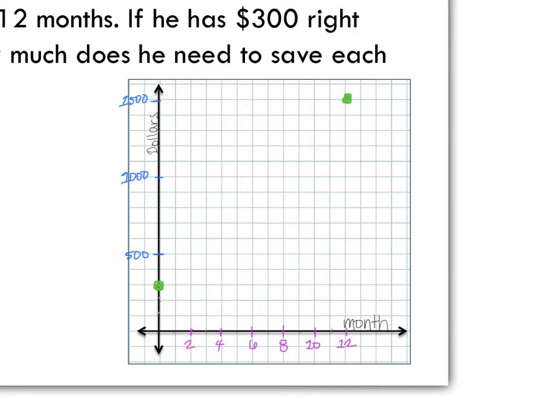So what we want to find is the slope to get this line right here. So what's the rise over run? How much do we need to save each month? So let's go look back into this.